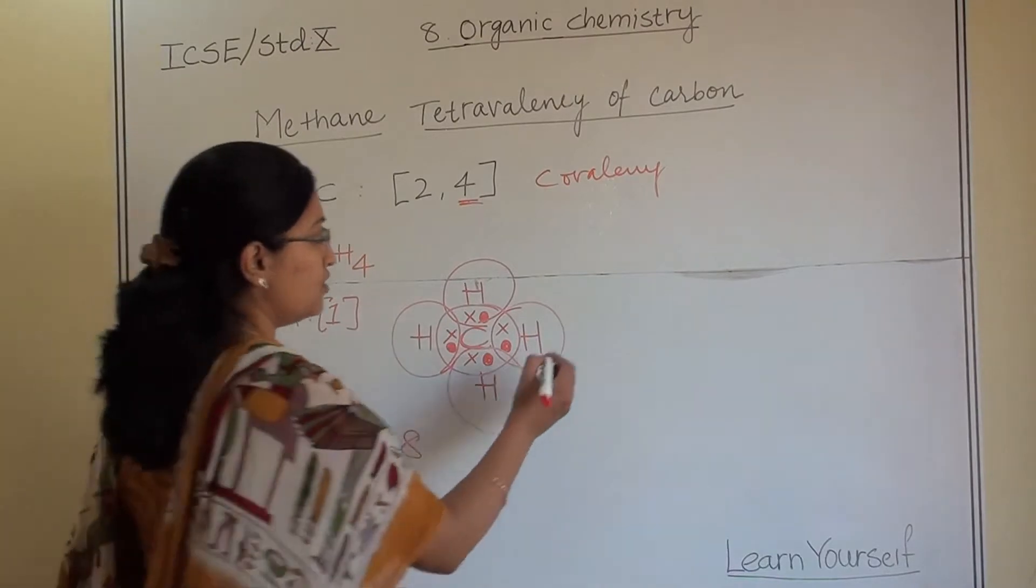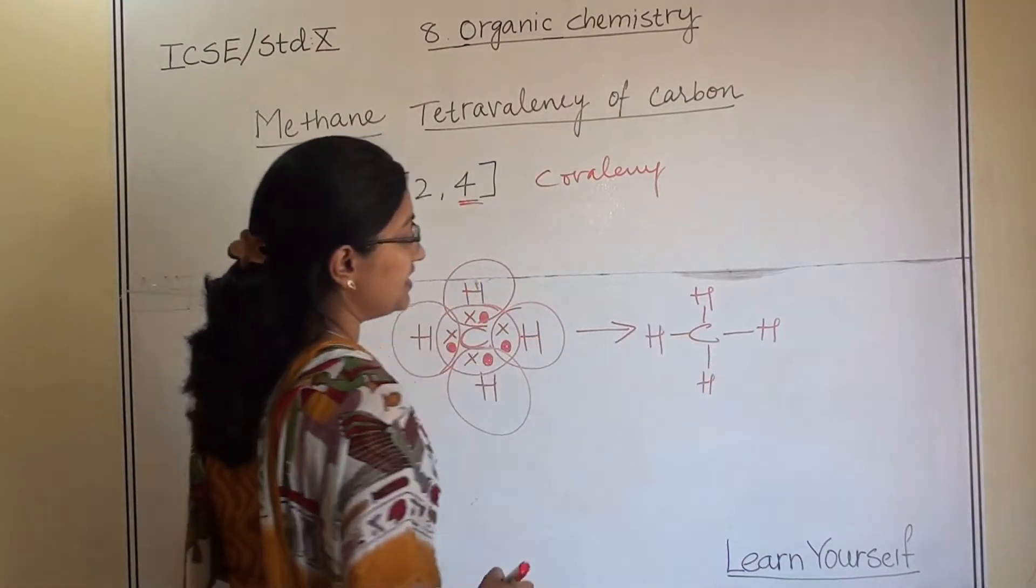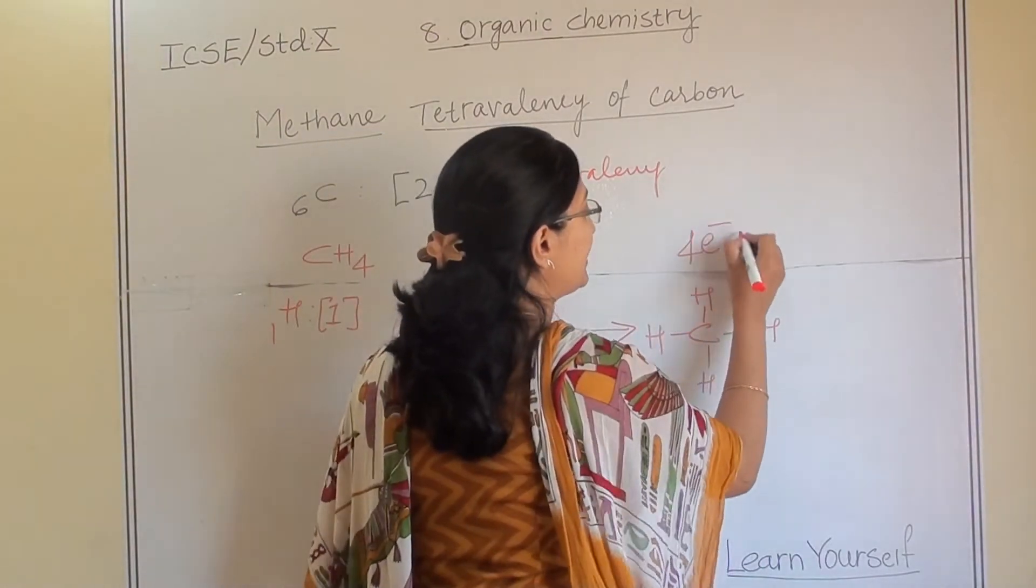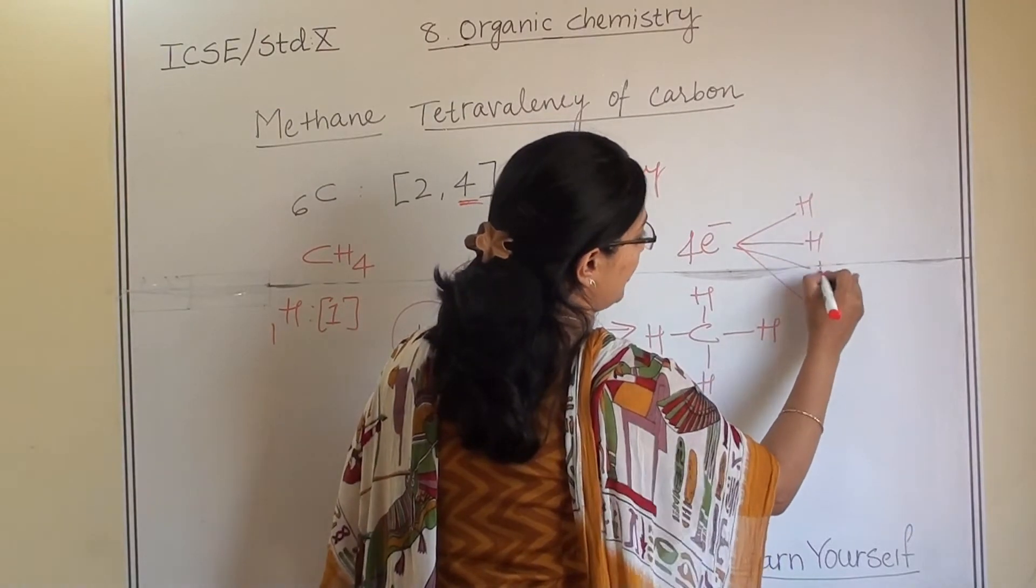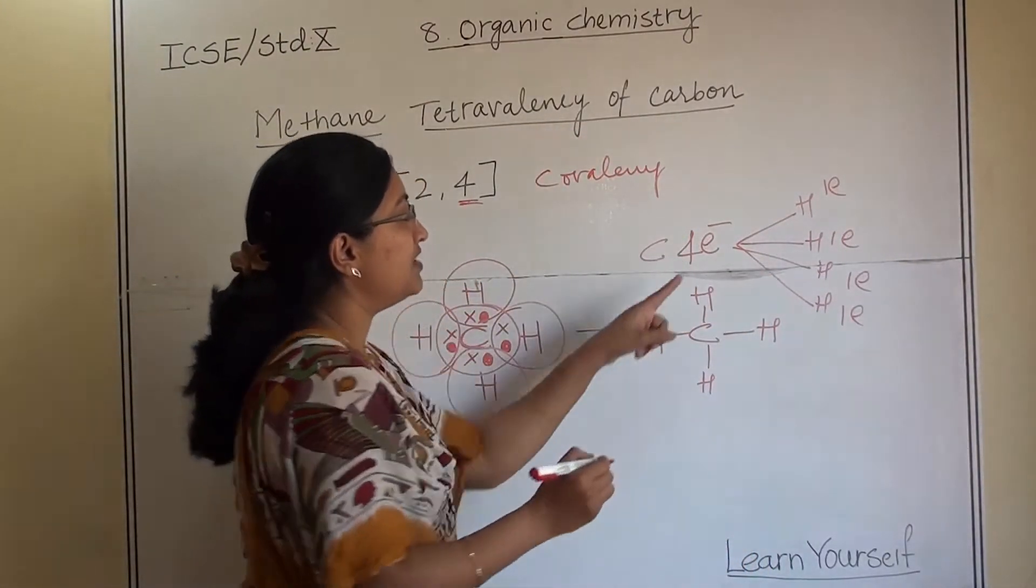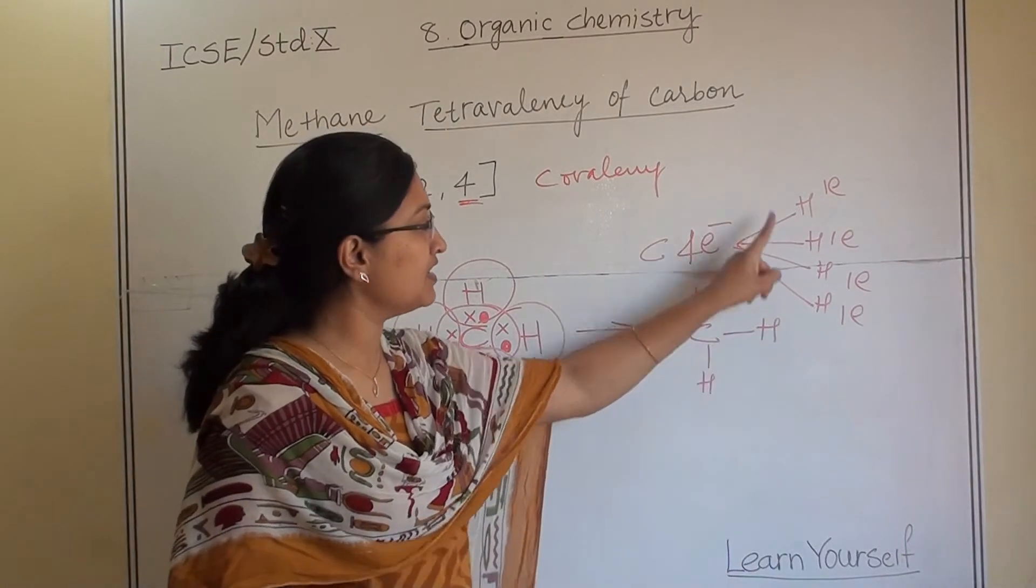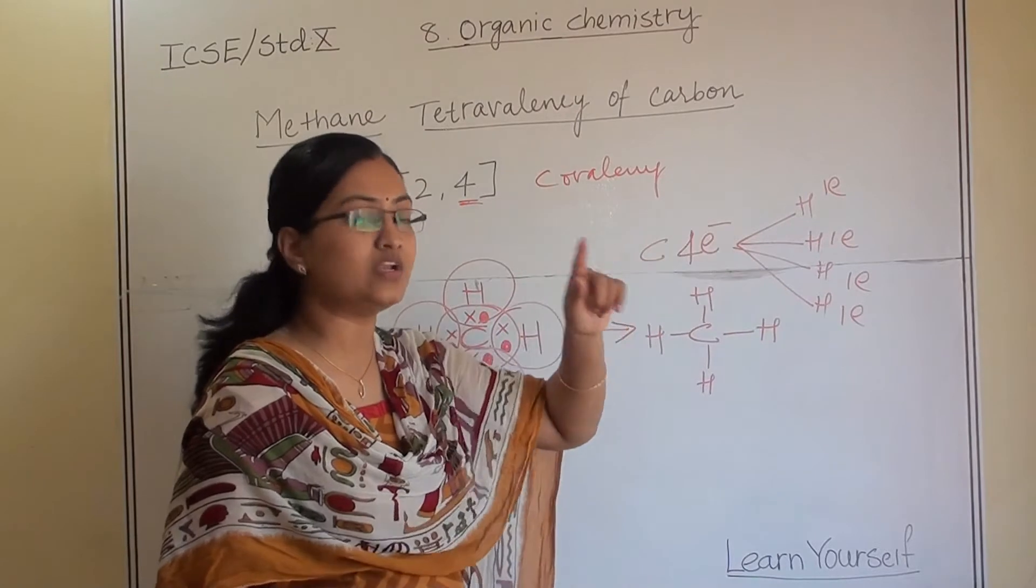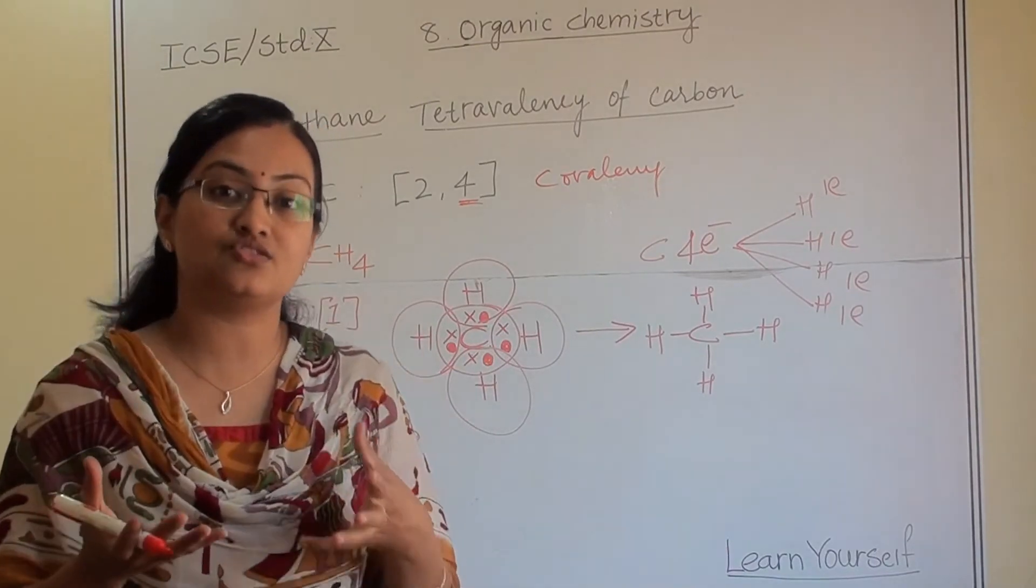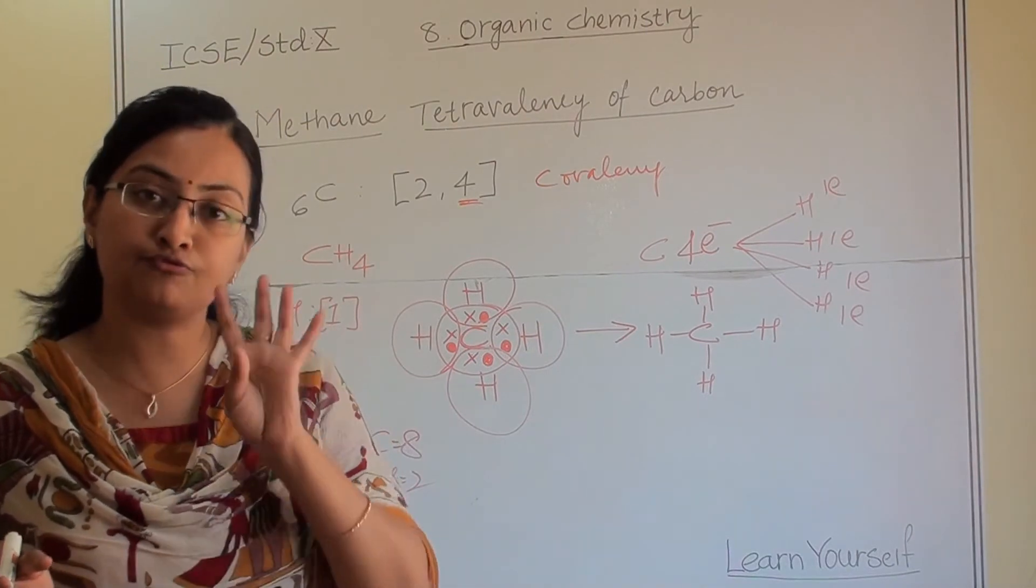So how can we show this? With one covalent bond here, one covalent bond here, and one covalent bond here. So there are 4 covalent bonds which show that carbon has shared 4 electrons with 4 different hydrogen atoms. And each hydrogen has shared one electron to the same carbon atom. Again, this carbon atom has shared 4 electrons to 4 different hydrogen atoms, and all 4 different hydrogen atoms have shared one electron each to 1 single carbon atom. So this concept is very important when you are writing an organic structure. You have to always make sure the tetravalency of carbon has been fulfilled with 4 different covalent bonds.